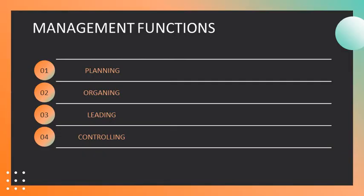There are basically four management functions. First, planning, which involves setting goals, establishing strategies for achieving those goals, and developing plans to integrate and coordinate activities. Second, organizing, which involves arranging and structuring work to accomplish organizational goals. Third, leading, which involves working with and through people to accomplish organizational goals. Fourth, controlling, which involves monitoring, comparing, and correcting work performance. All these management functions lead to achieving the organization's stated purposes.